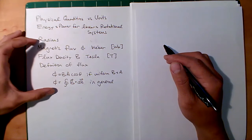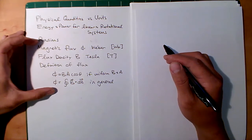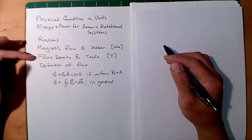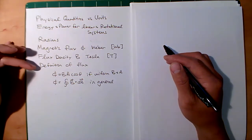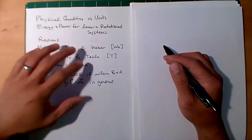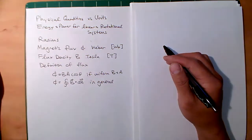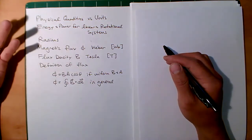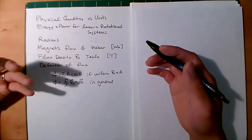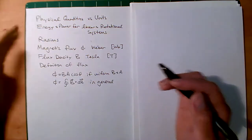These are in some way a review from physics — probably been quite a bit of time — but we're going to talk about magnetic flux, flux density, and then the definition of flux and how these two relate. This is very fundamental to the beginning of our course in trying to understand how motors, generators, and transformers work.